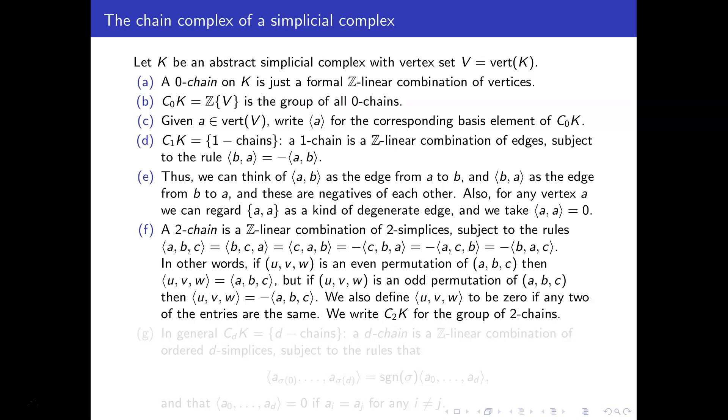And again, we could also have this sort of degenerate case. So ⟨u,v,w⟩, if two entries in the list are the same, then we count that as zero. And so that's the rules for the groups C_2(K), which is the group of 2-chains.